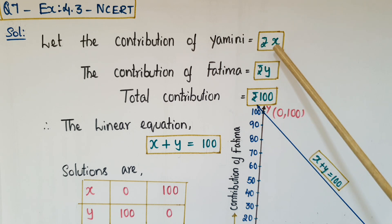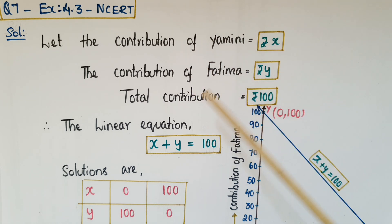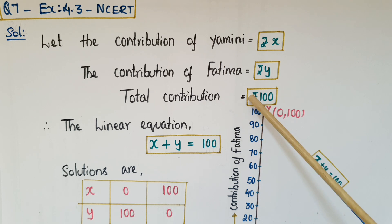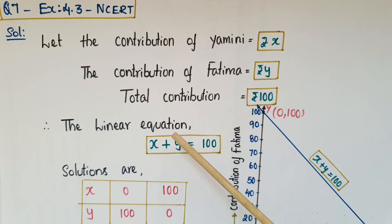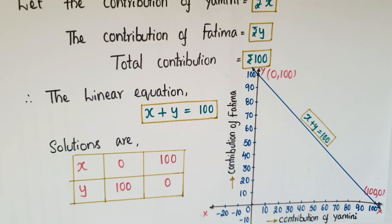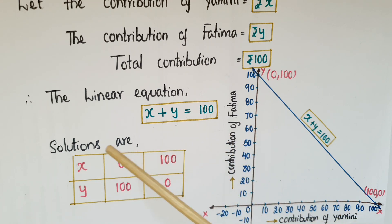For the solution to problem seven: let the contribution of Yamini be x rupees and the contribution of Fatima be y rupees. The total contribution is one hundred rupees, so the linear equation is x plus y equals one hundred. To draw the graph, find a minimum of two solutions.